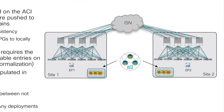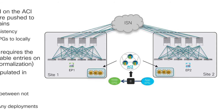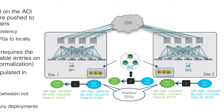Consider an example with two sites: an endpoint in a web EPG in Site 1 wants to communicate with an endpoint in an app EPG in Site 2. We go to the Multisite Orchestrator and create a contract between the web EPG and app EPG. The MSO then pushes that configuration to each APIC domain so it can be locally rendered.